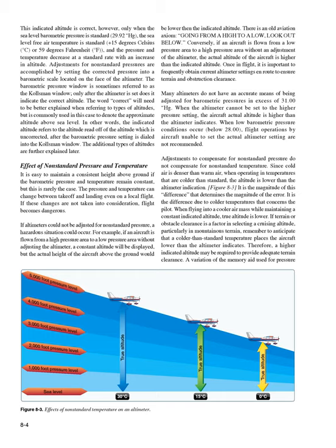Conversely, if an aircraft is flown from a low-pressure area to a high-pressure area without adjusting the altimeter, the actual altitude of the aircraft is higher than the indicated altitude. Once in flight, it is important to frequently obtain current altimeter settings en route to ensure terrain and obstruction clearance. Many altimeters do not have an accurate means of being adjusted for barometric pressures in excess of 31.00 Hg. When the altimeter cannot be set to the higher pressure setting, the aircraft's actual altitude is higher than the altimeter indicates. When low barometric pressure conditions occur — below 28.00 — flight operations are not recommended for aircraft unable to set the actual altimeter setting.